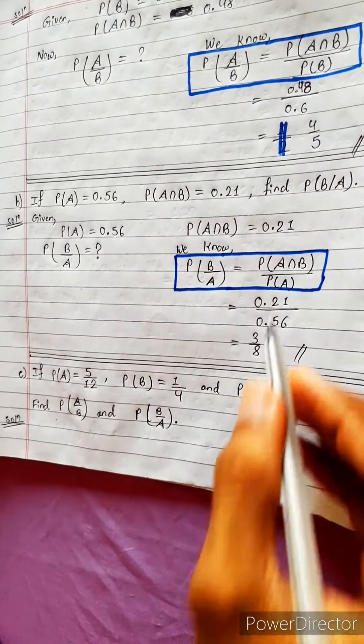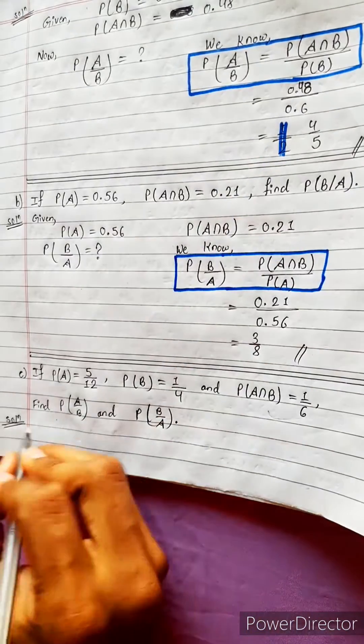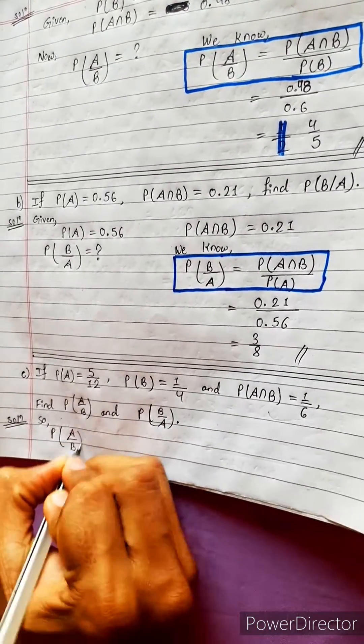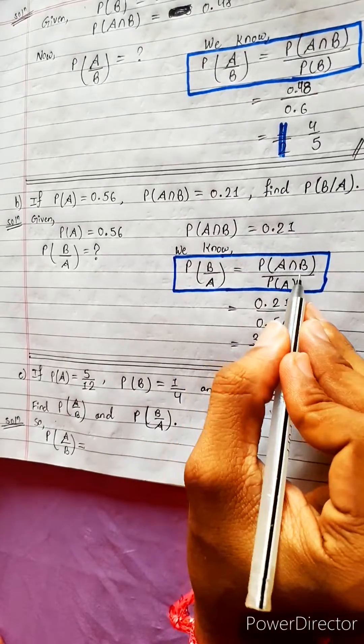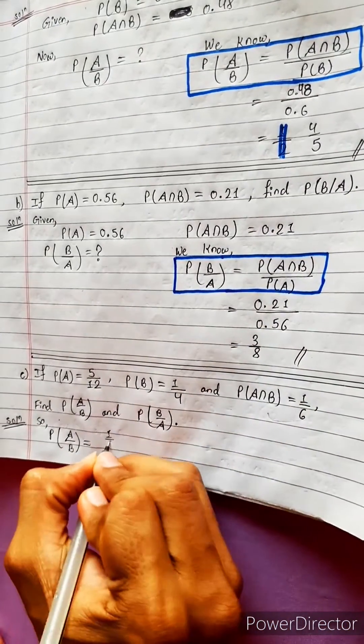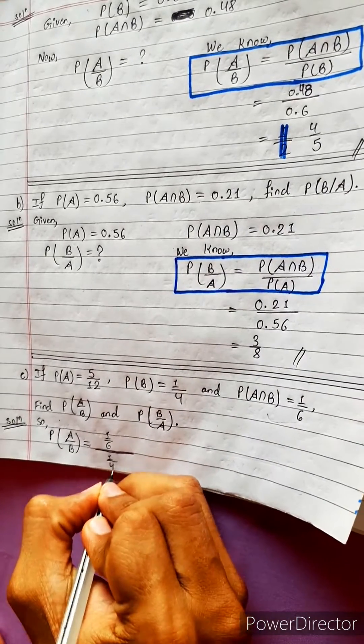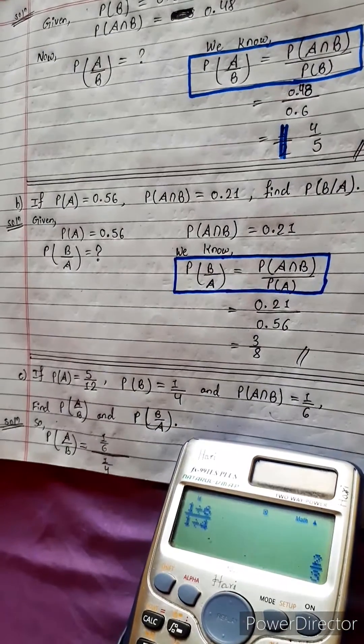So the intersection is A by B, we have to make an answer. P(A|B) equals to the intersection of the formula, 1 by 6 divided by B, 1 by 4. This is the calculator. This is 2 by 3.